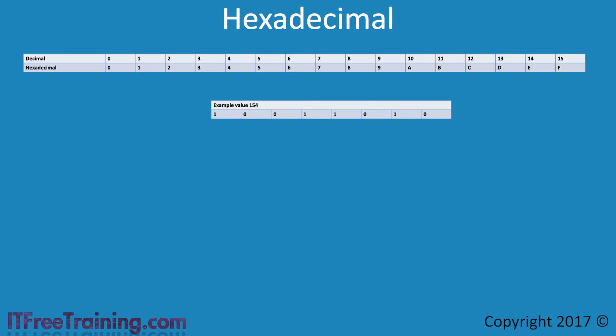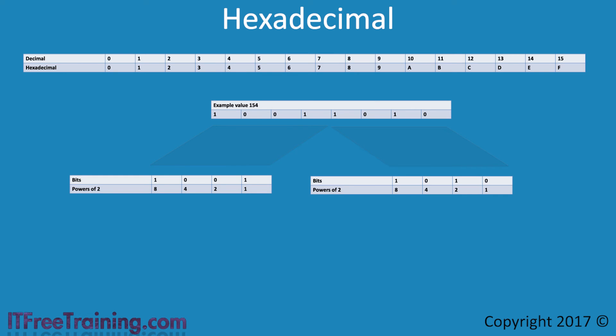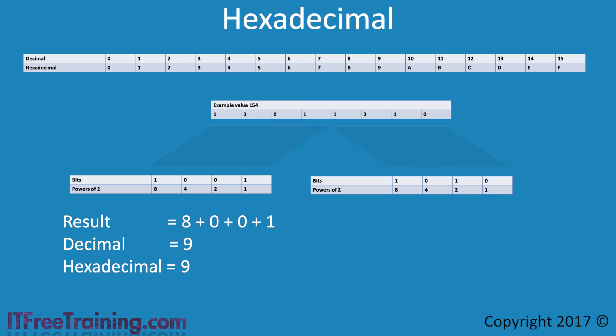I will now have a look at how to convert the example of 154 to hexadecimal. 154 has already been converted to binary. The next step is to divide the 8 bits into two 4-bit parts. Just like when converting numbers to and from binary, the power of 2 will be used. Since there are only 4 bits, only 8, 4, 2 and 1 will be used. To perform the last step, it is just a matter of converting the 4-bit value to a decimal. The left bits, when added together, give the result of 9. Looking up this value in the table gives the same value of 9, so the left part is 9 in hexadecimal.